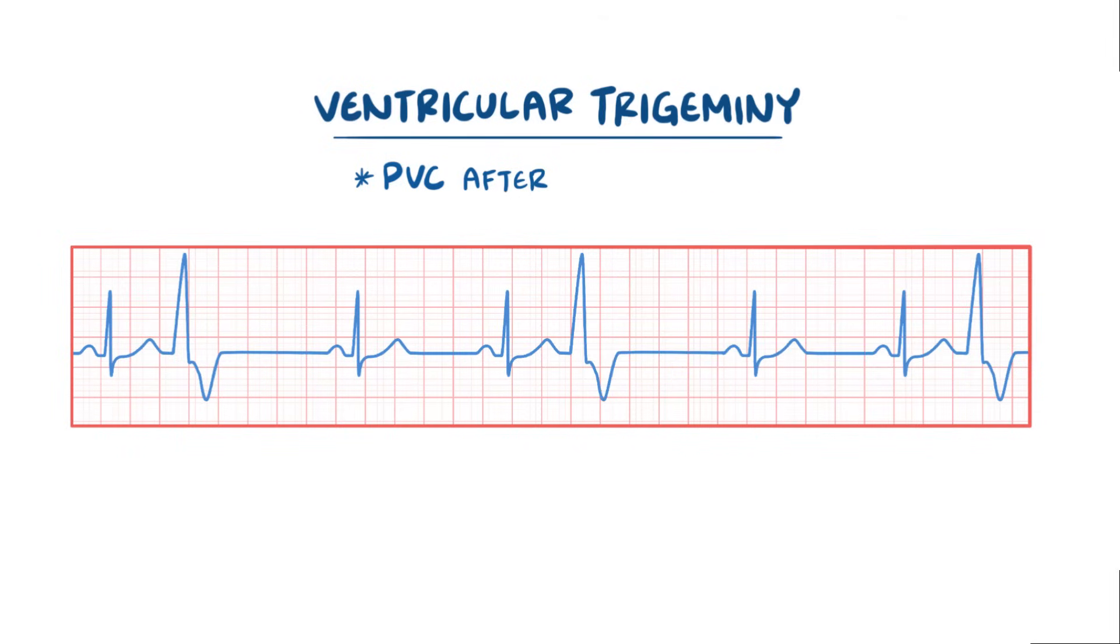Ventricular trigeminy, on the other hand, is when one consistently comes after every two normal cardiac cycles.